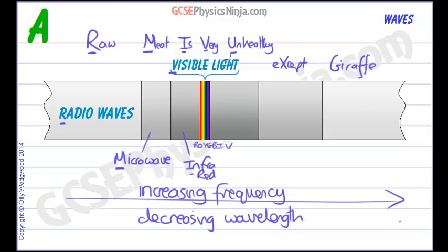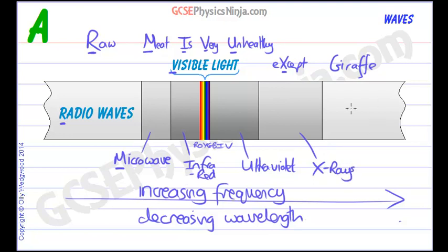Then we have U for 'unhealthy,' which stands for ultraviolet, which also comes from the sun and can give you bad burns if you stay out too long. 'Except' is a bit of a cheat because we are looking at the X, not the E — so 'except' stands for X-rays, used in hospitals. Finally, G stands for gamma waves or gamma rays, which often come out of the nucleus of unstable atoms and are part of nuclear radiation.